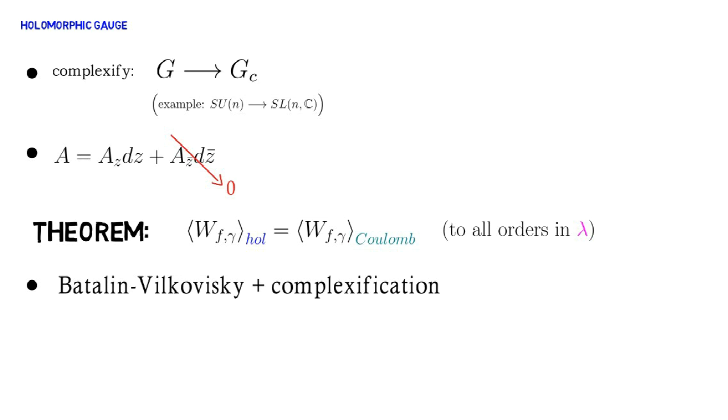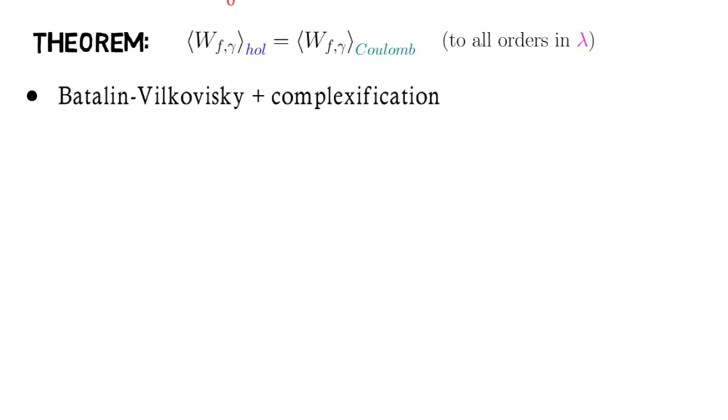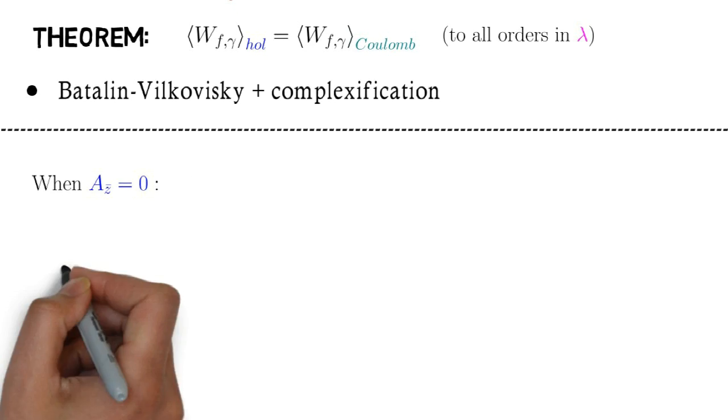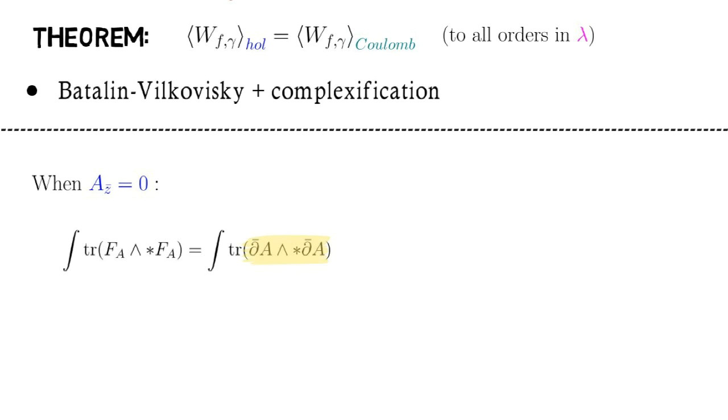Mathematically, this result is quite surprising, since the kinds of Feynman diagrams we get in holomorphic gauge differ greatly from the ones that we get in Coulomb gauge. In holomorphic gauge, the Yang-Mills action is quadratic, since the quadratic term in the curvature tensor vanishes.